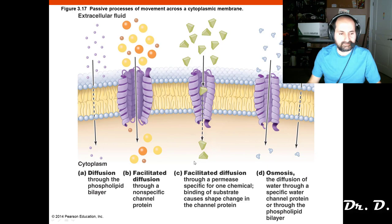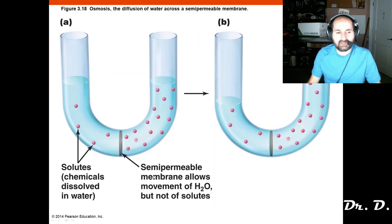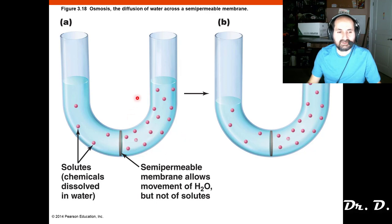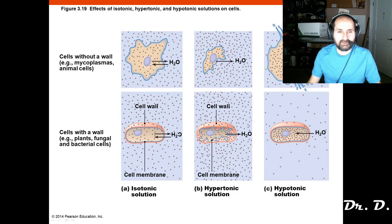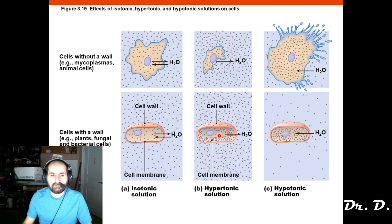Water cannot cross the membrane — it needs a channel called an aquaporin because it's polar. We talked about osmosis: water moves from high concentration of water toward low concentration of water. That's osmosis, which is diffusion of the solvent. Dialysis would be diffusion of the solute. In an isotonic solution, the water concentration is the same inside and out. In a hypertonic solution, the water concentration is greater inside than outside, so water will leave the cell.